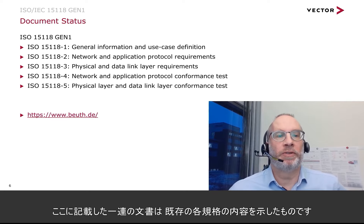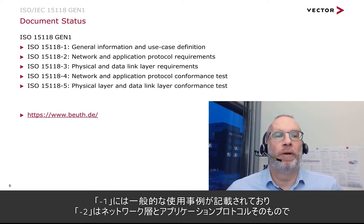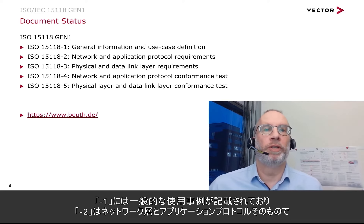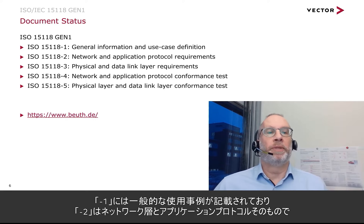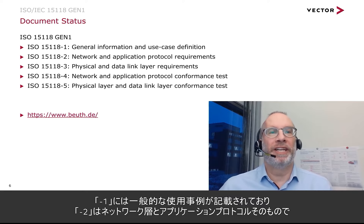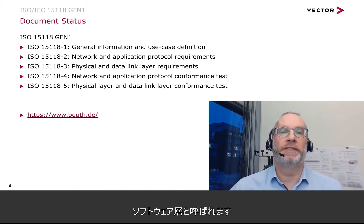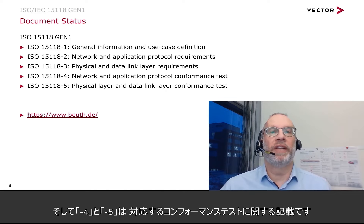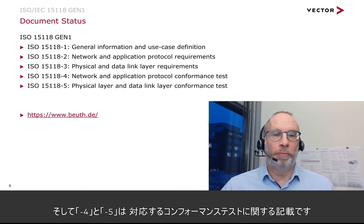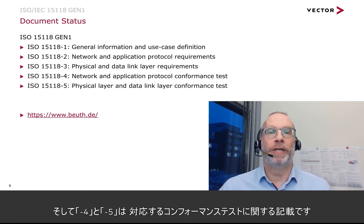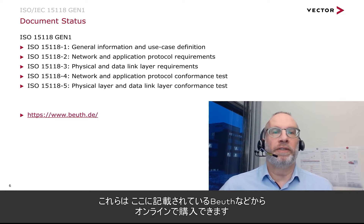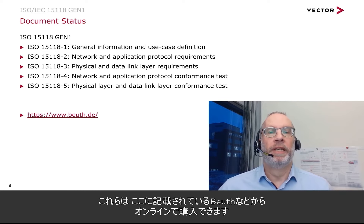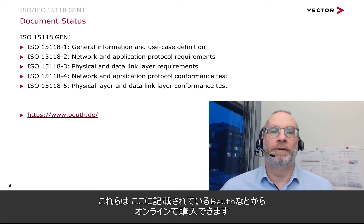This is a set of documents out there describing the standard: the dash-one document with the general use cases, dash-two covering the software layers — the network layers and the application protocol itself — and the dash-three document with the data link and physical layers, with corresponding conformance test documents in dash-four and dash-five. You can buy them online, for example, from the Beuth Verlag.